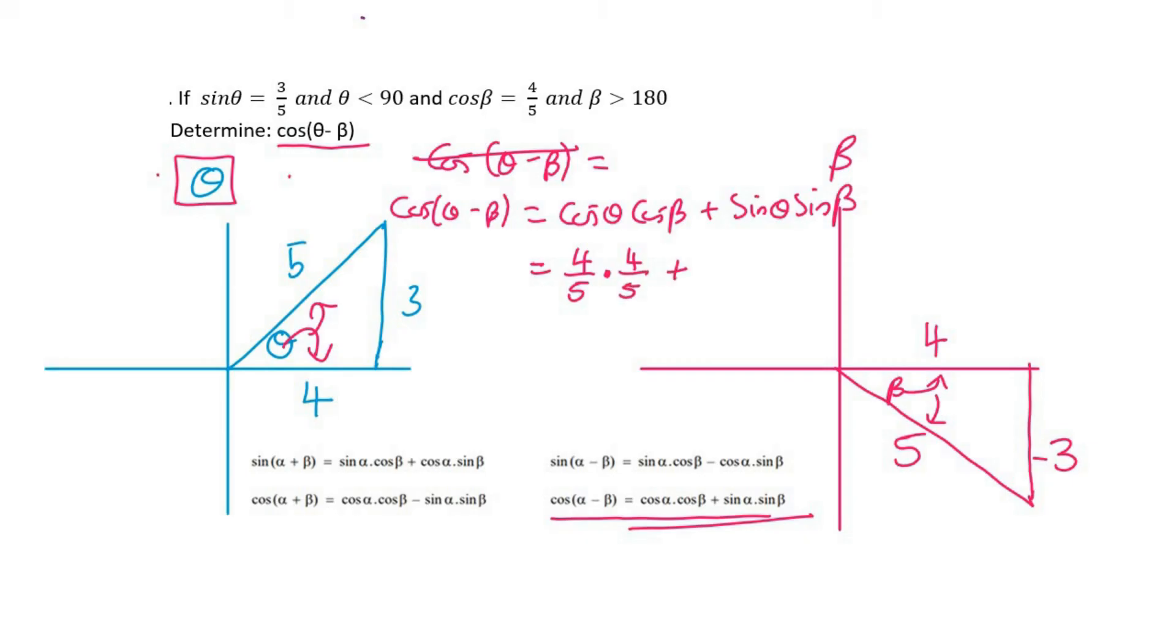Plus then sin theta is opposite over hypotenuse. So it's in that triangle. So that's three over five. And then sin beta, you're obviously going to have to use the beta triangle now. And so that's going to be opposite, which is now negative three over its hypotenuse, which is like that.